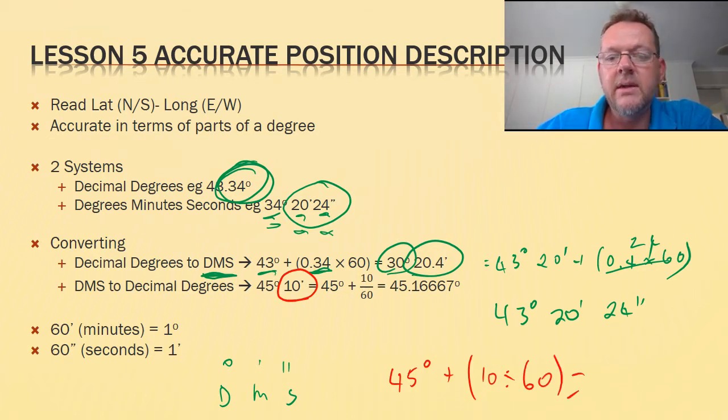10 divided by 60 is about 0.167, so we're saying 45.167 decimal degrees. So there's something to remember: there are 60 minutes per degree, and there are 60 seconds per minute.